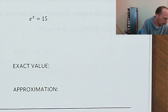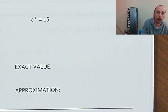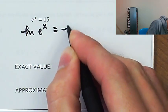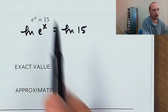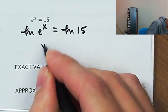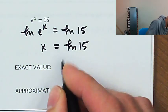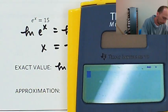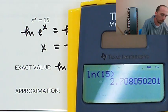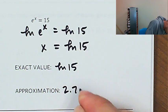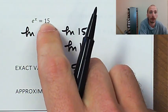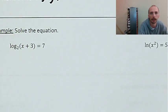Another equation: e to the x equals 15. Because the base is e, I need the base of my log to be e — that's natural log. So natural log of e^x equals natural log of 15. Natural log of e^x is just x. So x equals the natural log of 15. The exact value is ln(15); the approximate value, using the calculator, is 2.708.